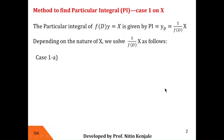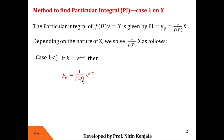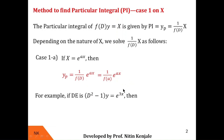Consider the case when RHS is e raised to ax. Then the particular integral yp, that is 1/f(D) of e^(ax), can be obtained by simply substituting a for every D in f(D). Therefore yp is now given by 1/f(a) into e raised to ax. Let us understand this with the help of an example.